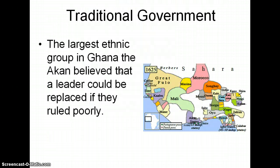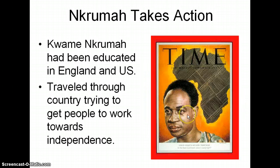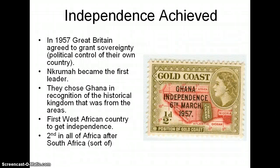The largest ethnic group in Ghana are the Akan, and they believe that a leader could be replaced if they ruled poorly. Now, Nkrumah — Kwame Nkrumah — is the name of the first leader of the new country of Ghana. He'd been educated in England and the U.S. and had traveled through his country trying to get people to work towards independence in a non-violent way. In 1957, Great Britain agreed to grant sovereignty — political control of their own country — and Nkrumah became the first leader. He chose the name Ghana in recognition of the historical kingdom from around the area. It was the first West African country to get independence, and relatively soon after, Nigeria became independent too, in 1960.